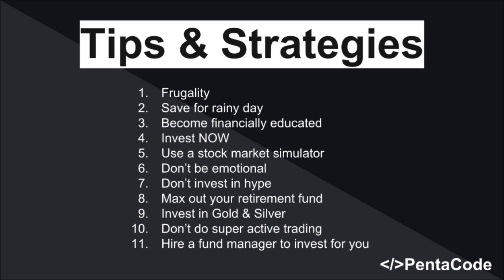Number eight: max out your retirement fund. Unless you're a freelance developer, chances are your company offers retirement funds. My number one advice is to contribute to the maximum allowed every month, and if your company provides matching contributions, that's even better. This money will be taken out of your paycheck every month and offer tax benefits. Just let it happen automatically, because after a few years that money will grow and you'll be much closer to being a millionaire. Number nine: invest in gold and silver as a hedge for the future. Gold and silver usually move in the opposite direction of the strength of the US dollar.